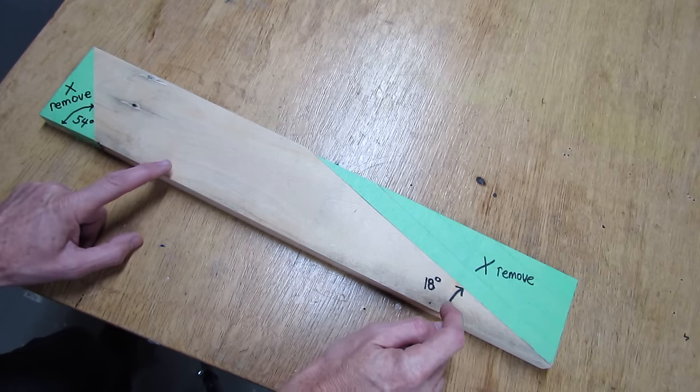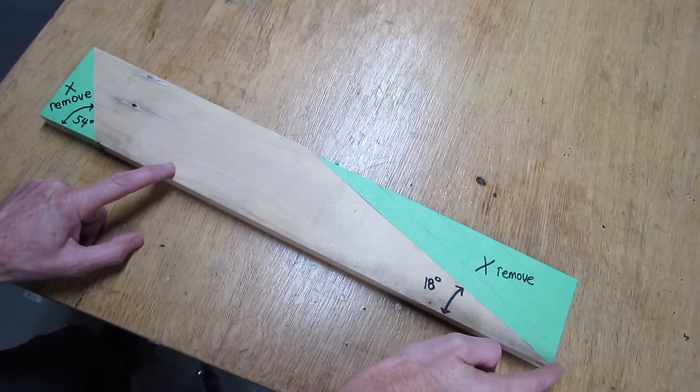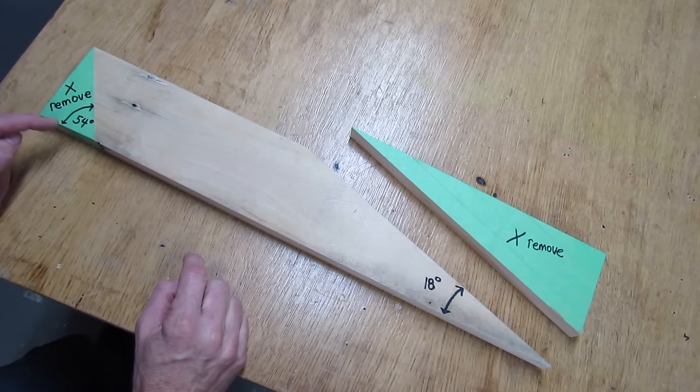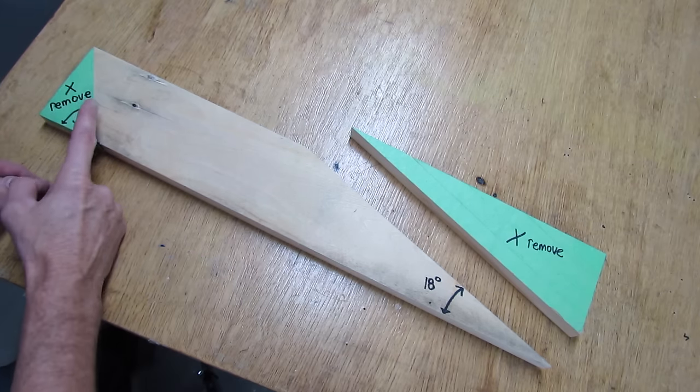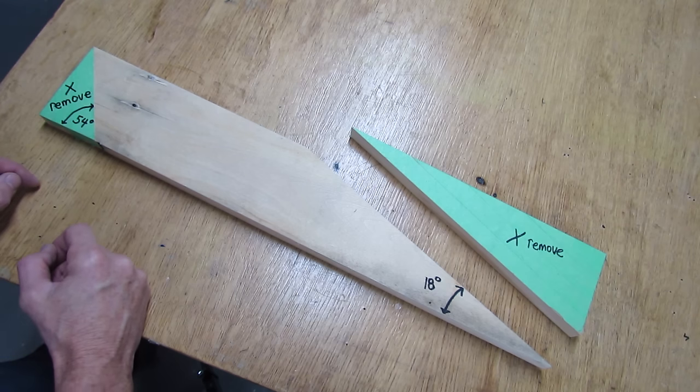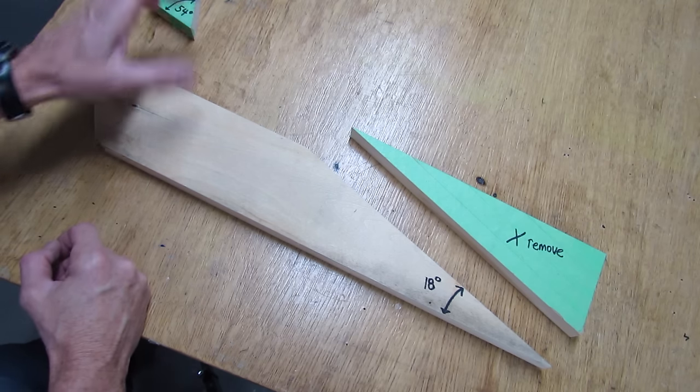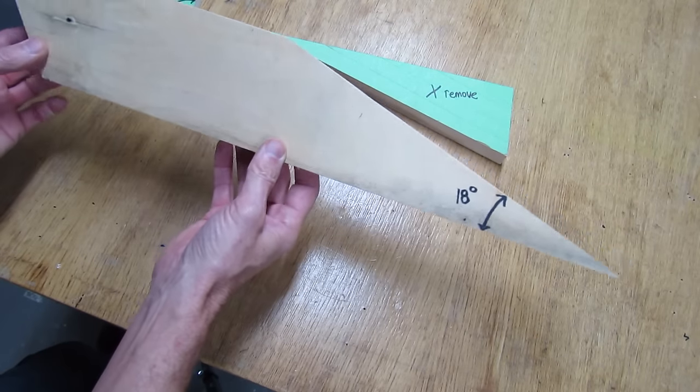So on one end you're going to make an 18 degree angle and cut that piece off, and at this end you're going to measure your saw and you're going to do a 54 degree angle on this end and you're going to remove this part and you're going to end up with a piece that looks just like that.